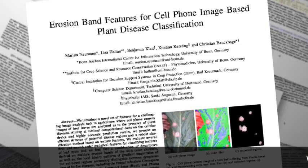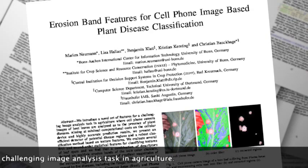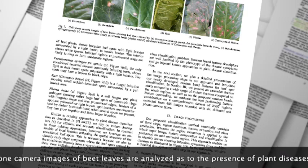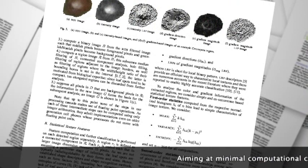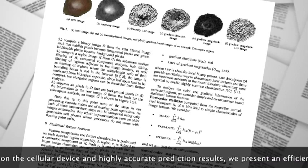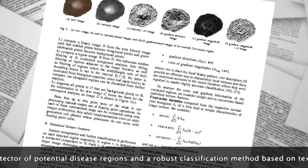We introduce a novel set of features for a challenging image analysis task in agriculture. Here, cell phone camera images of beet leaves are analyzed for the presence of plant diseases. Aiming at minimal computational costs on the cellular device and highly accurate prediction results, we present an efficient detector of potential disease regions and a robust classification method based on texture features.